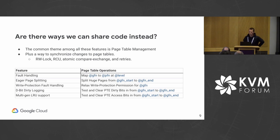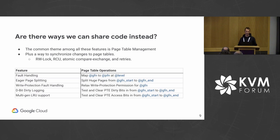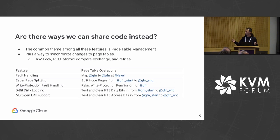The common theme among all these features is that it's all about page table management — specific modifications to the page tables plus ways to synchronize those changes. Parallel fault handling is about mapping guest physical addresses to a host physical address at some level in the page table hierarchy with certain permissions. Eager page splitting is taking a range of guest memory and splitting all the huge pages down to a lower level.